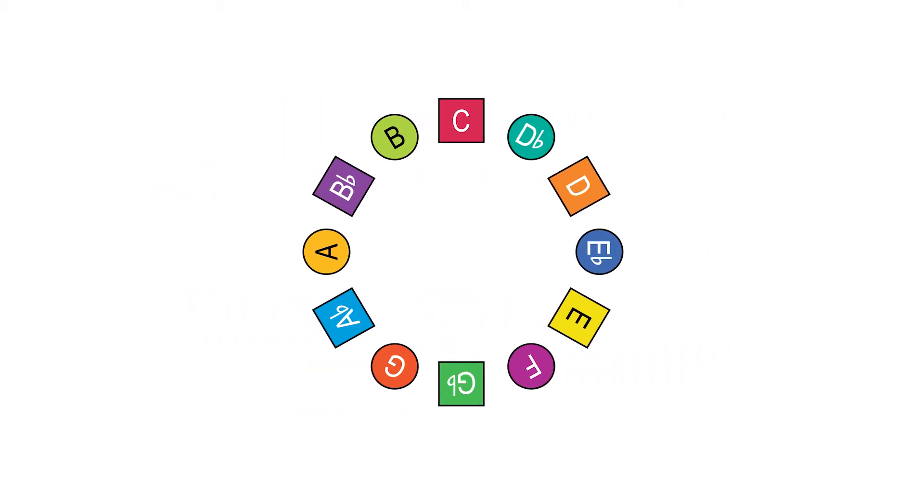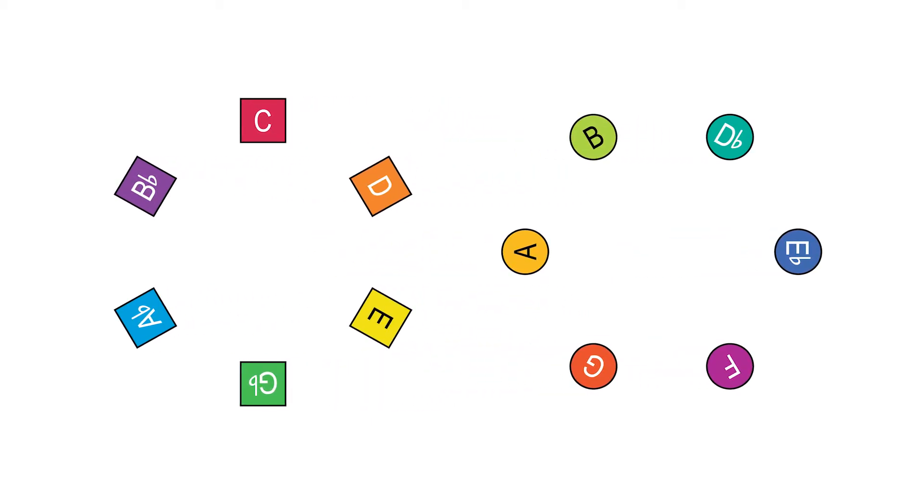Whole steps and half steps, which the colors and shapes emphasize by forming two sets of interlocking whole step intervals, where one set is all squares and the other is all circles.